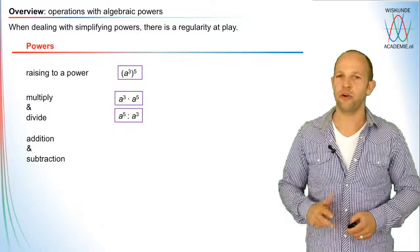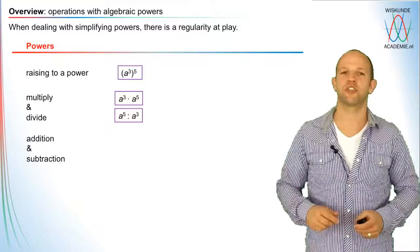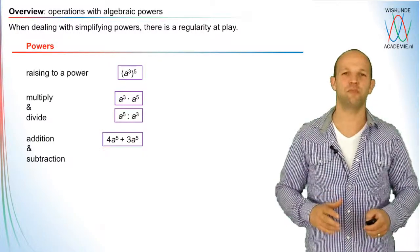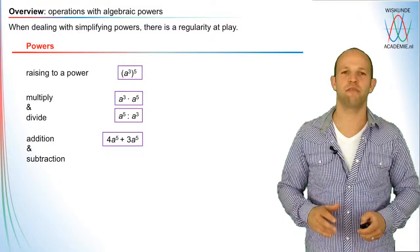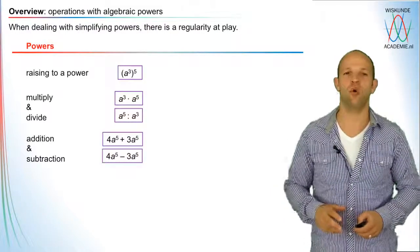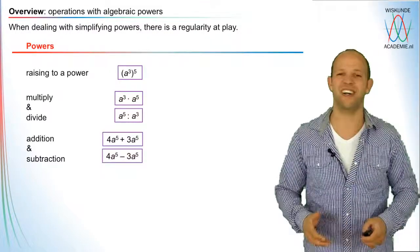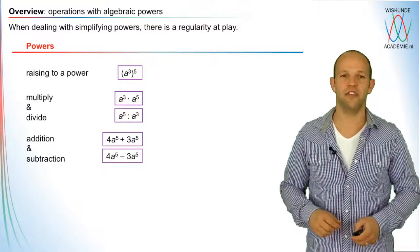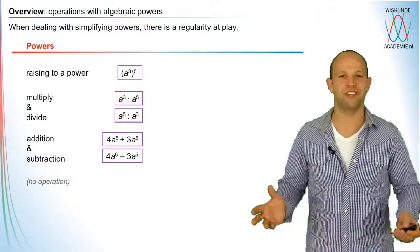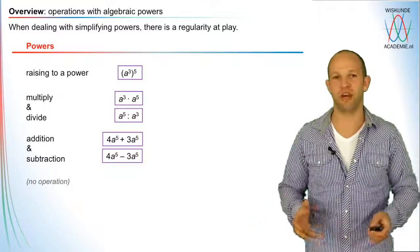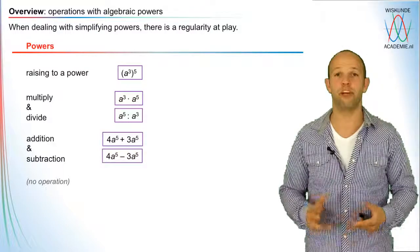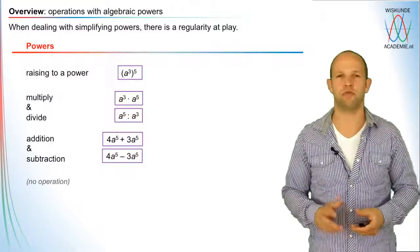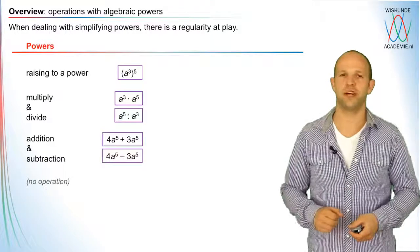The third option is addition and subtraction — for example, 4a to the power 5 plus 3a to the power 5, or 4a to the power 5 minus 3a to the power 5. And then the last case is when you can't do anything — for example when the bases are not alike and you cannot add up or multiply.